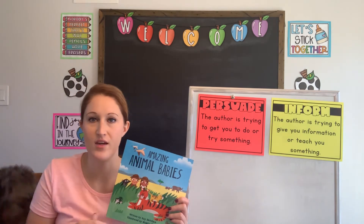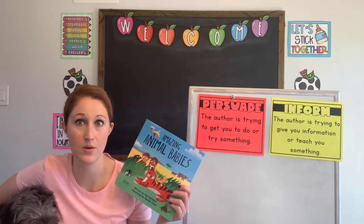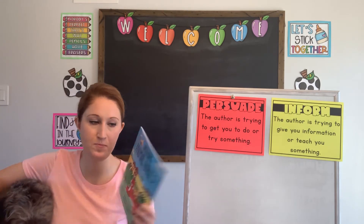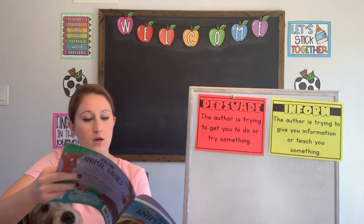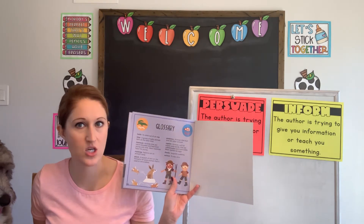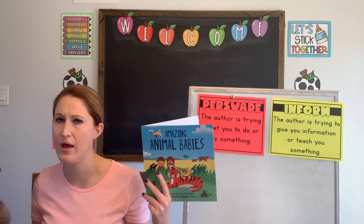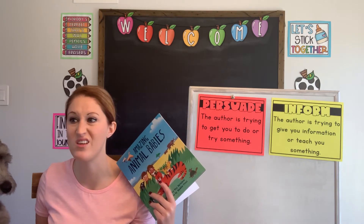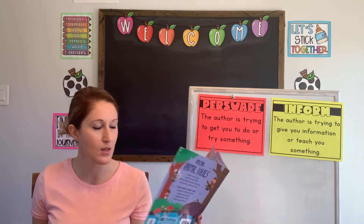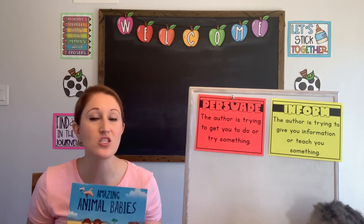When I read nonfiction books — we've talked about this before — nonfiction books have text features that help us read them. One of the text features we've talked about is the glossary. The glossary can be found at the back of the book, and it's kind of like a mini dictionary, but the words in the glossary are specific to the words in this book. What I like to do when I read a book that's going to give me new information is read the glossary first.